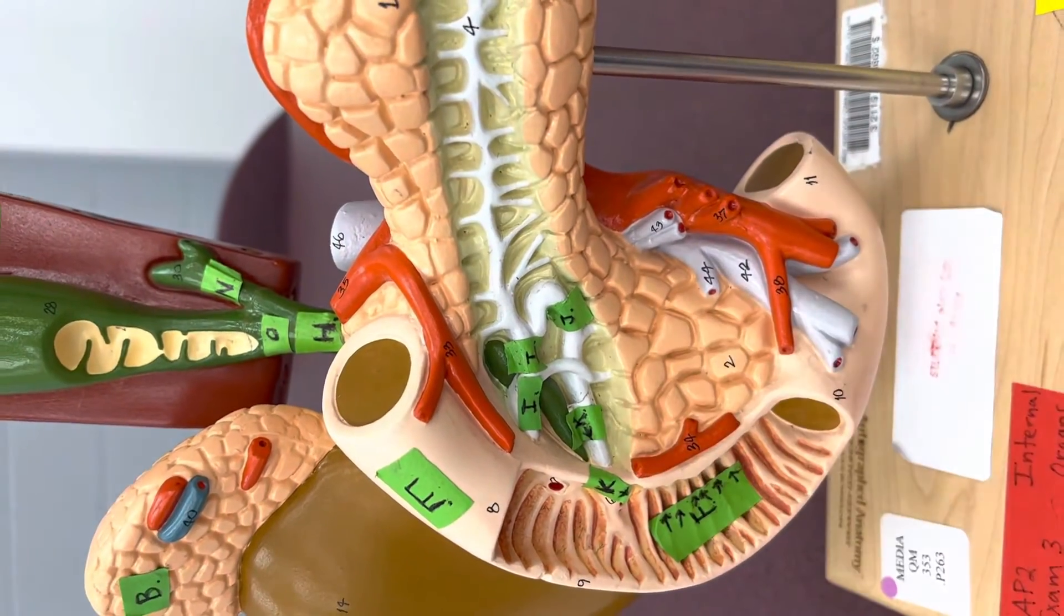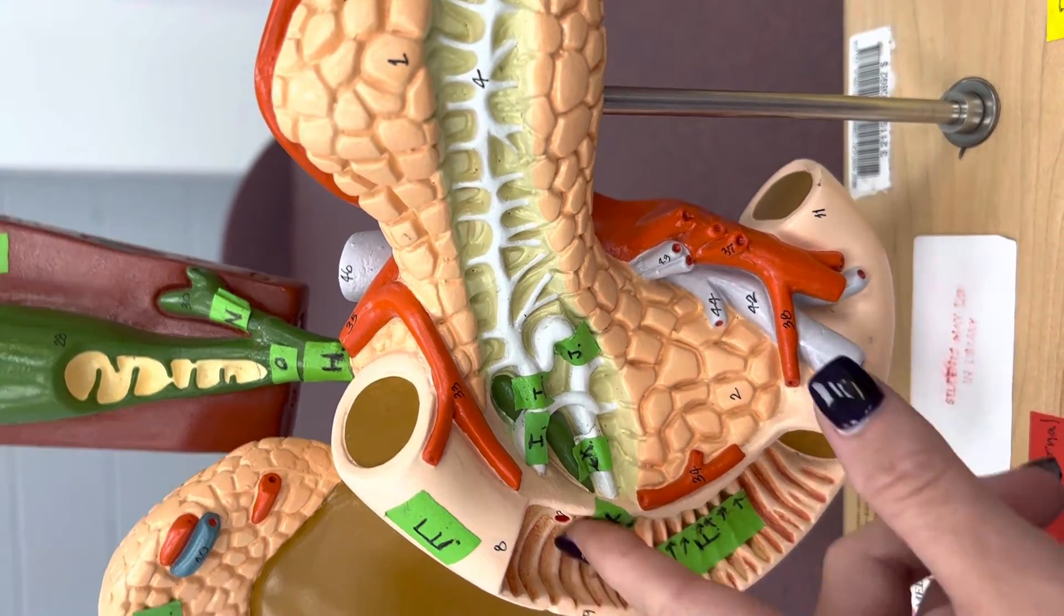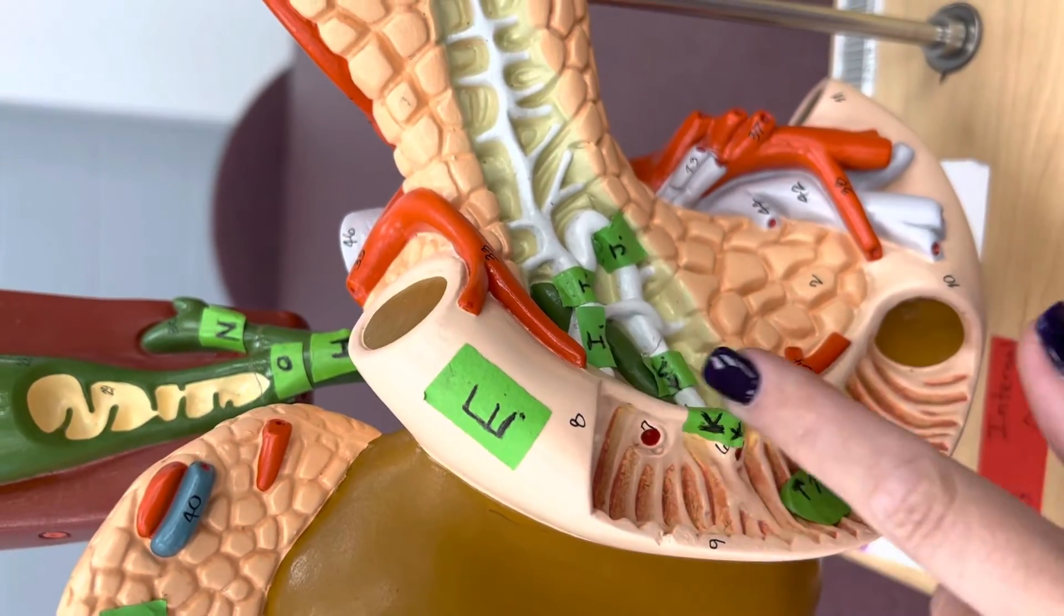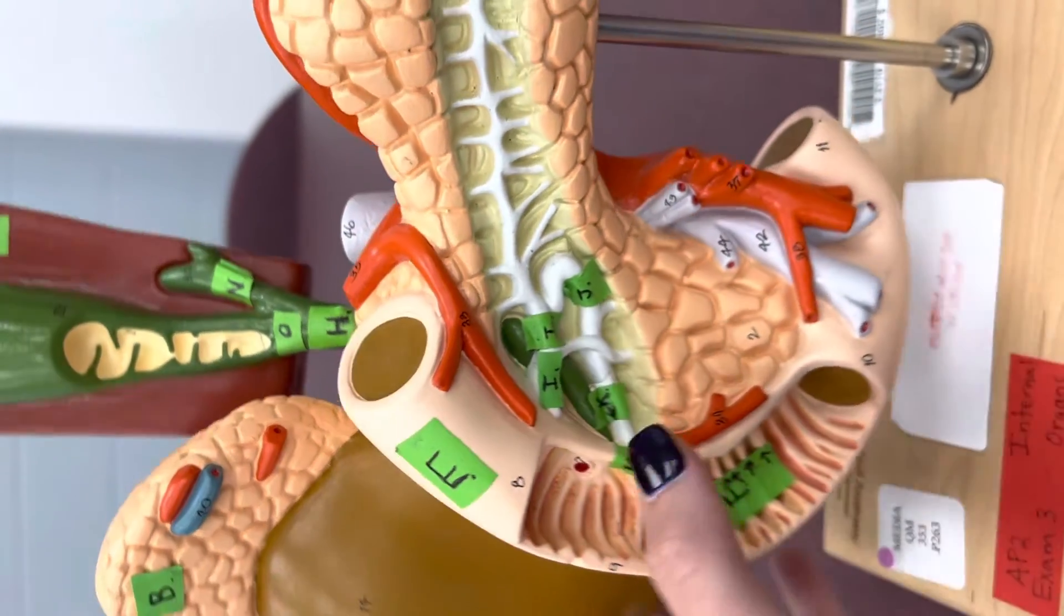K, right here. This is the hepatopancreatic duct. There it is on that side. Here it is where it's coming into the duodenum.